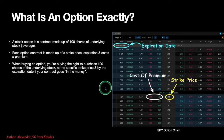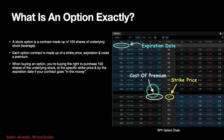When buying an option, you are buying the right to purchase 100 shares of the underlying stock at the specific strike price you chose, by the expiration date, if your contract goes in the money. That was the original purpose for options — to get leverage to 100 shares without having to buy it yet until the expiration date, assuming you were right on your bet.